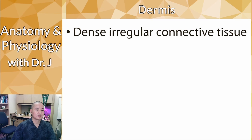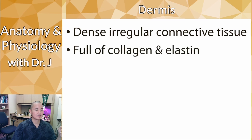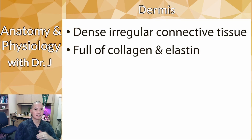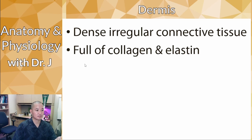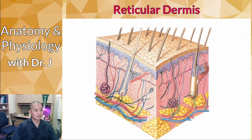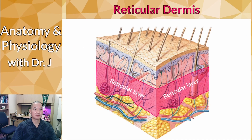The dermis is also important as a connective tissue — this is why we have the cutaneous membrane, with the epidermis and dermis together. It's full of collagen and elastin protein fibers. It's dense connective tissue because it has a lot of protein fibers compared to the jelly-like or fluid ground substance.